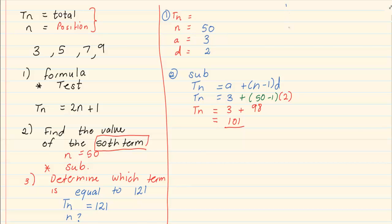Now when you are doing this, we are going to work with the exact same steps. You are going to start by writing TN, N, A and D. You are going to fill in the information we have. We have that TN is 121, we have that A is 3, and we have that D is 2.